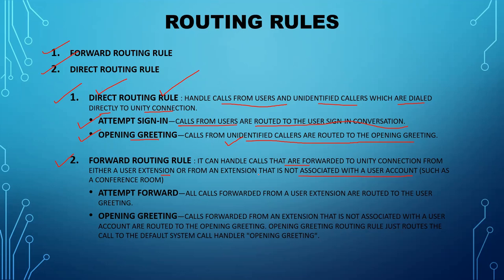In the forward routing rule there are two options: attempt forward and opening greeting. For attempt forward, all calls forwarded from a user extension are routed to the user greeting — if the voicemail box number matches, it forwards to that number and plays the existing greeting. If the call is forwarded from an extension not associated with a user account, it goes to the opening greeting, which routes the call to the default system call handler — the opening greeting call handler — which plays a welcome message.